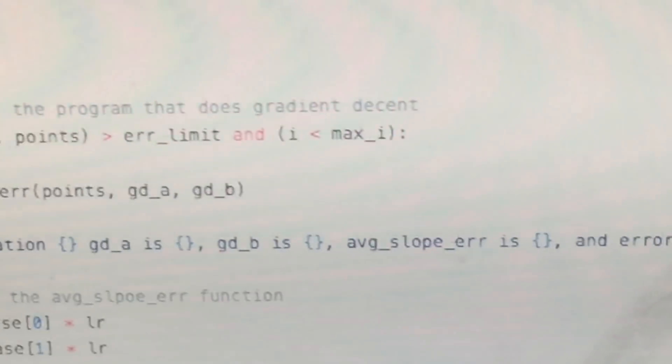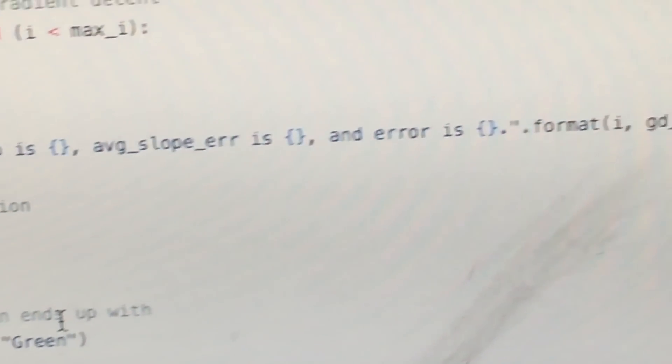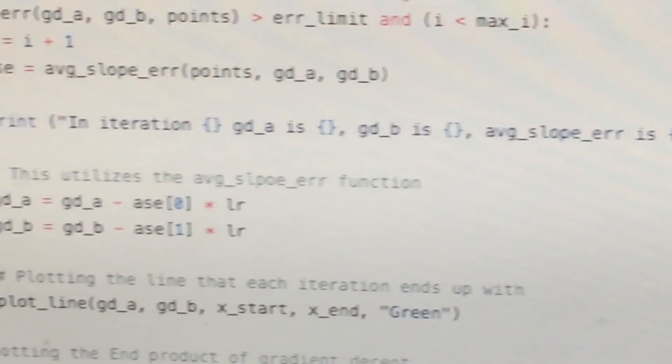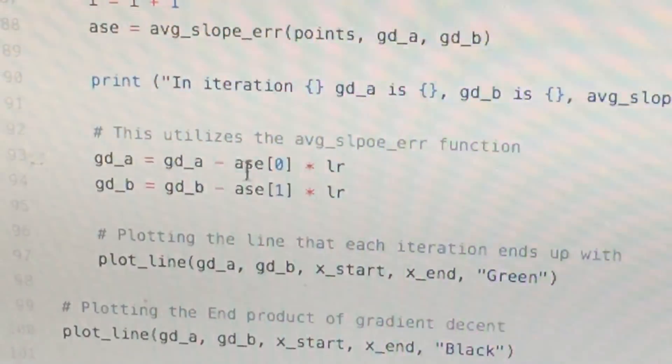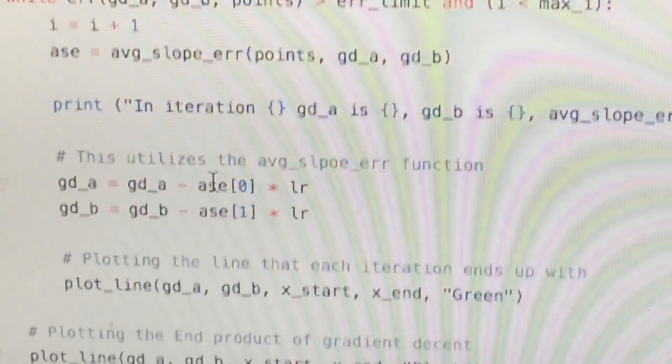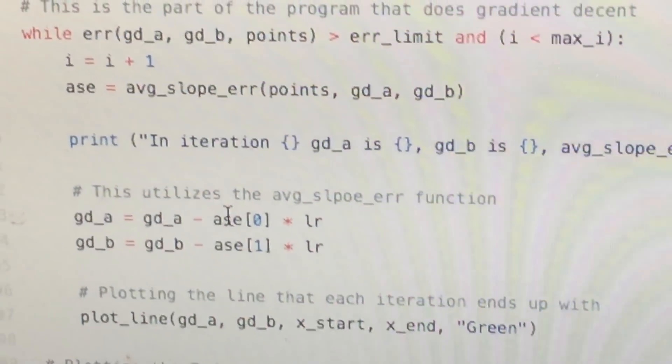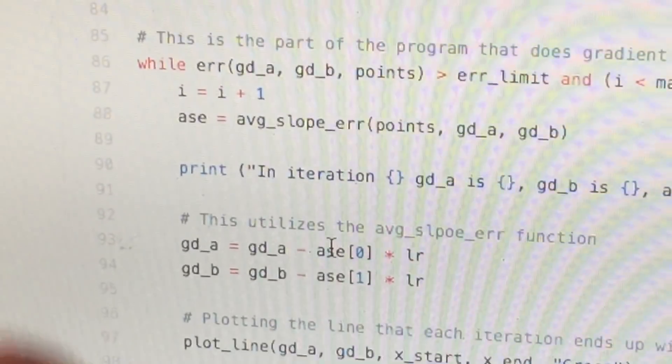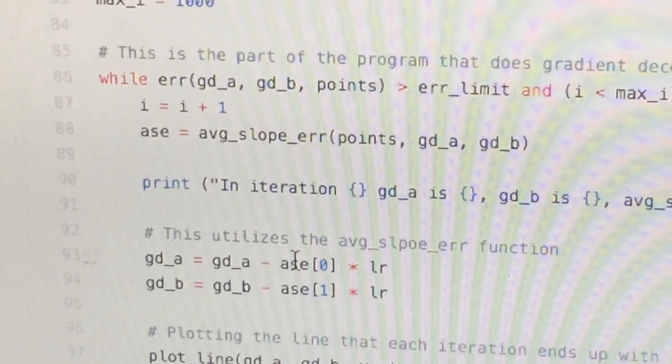This utilizes the average slope error function. So you have gd_a and gd_b, and then you figure out the error of that slope. You can find out the error of the axis with a and axis with b, and then you multiply by the learning rate so that you ski down a little bit in the right direction.